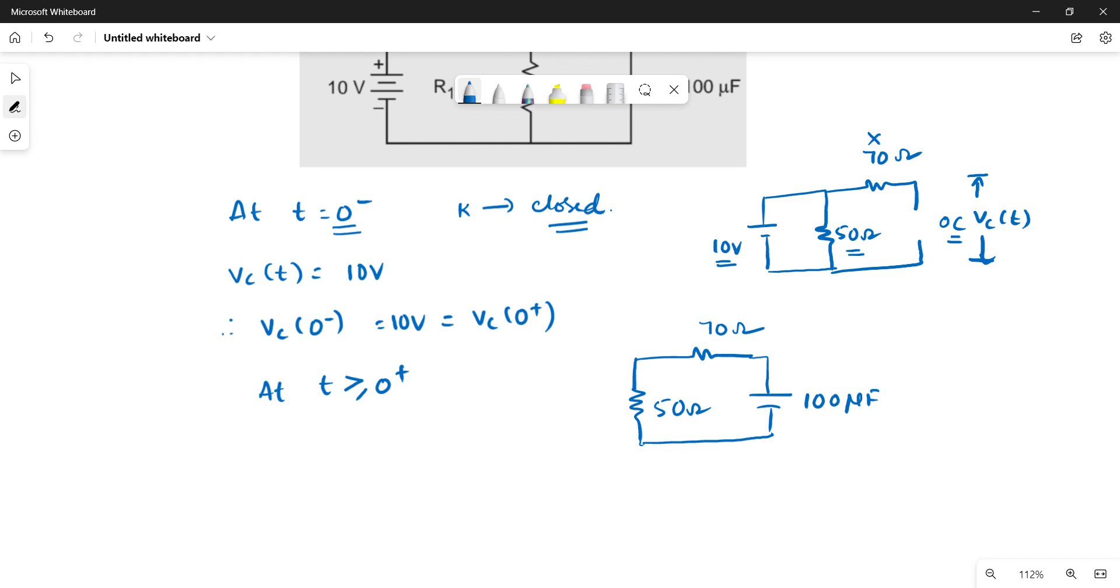Rather than calculating using time constant and directly substituting in the voltage equation, in this condition we are going to apply KVL. Voltage across 50 ohm plus voltage across 70 ohm plus voltage across capacitor must be equal to zero.